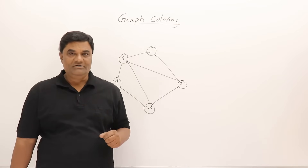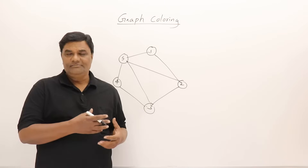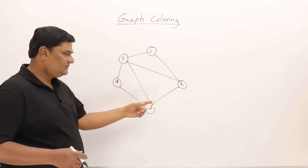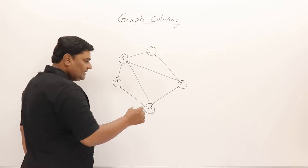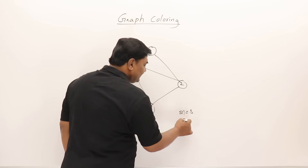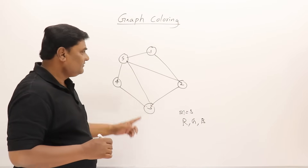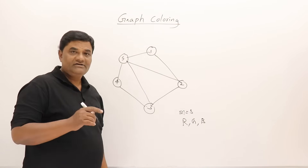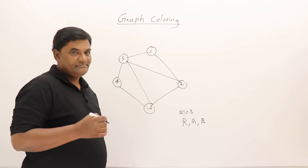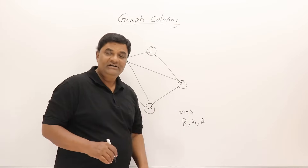The topic is the graph coloring problem, which can be solved using backtracking. A graph is given along with some colors — let us say three colors: red, green, and blue. The problem is to color the vertices of the graph such that no two neighboring or adjacent vertices have the same color.